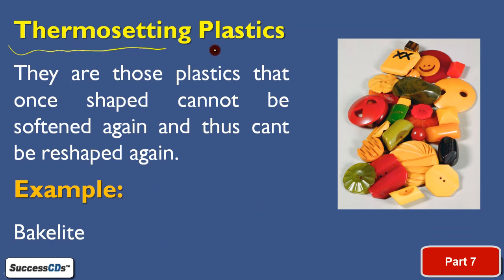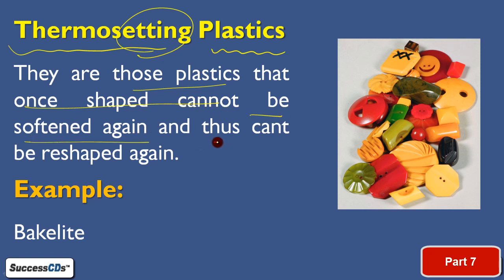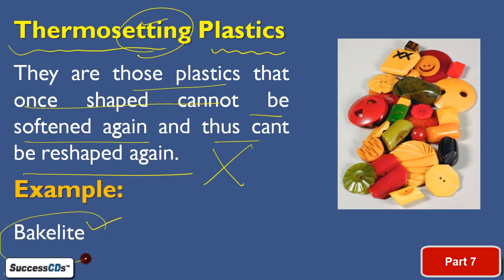Another category is thermosetting plastics. These are plastics where 'setting' means once you have given them a shape, you cannot melt them again to make them soft, and you cannot give them another shape. Unlike thermoplastics, once the shape is set it won't change. An example is bakelite — it is a kind of plastic which you cannot mold or reshape again and again. As you can see in the figure, all these materials are made up of thermosetting plastics — once shaped, they cannot be reshaped.